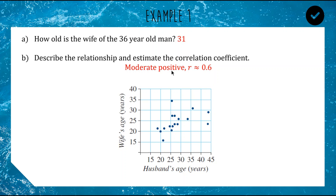If that was closer to 0.3, we call it a weak positive. And if it was closer to 0.8 or 0.9, we would call it a strong positive relationship. I know it's positive, not negative, because both values are increasing.